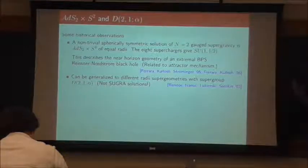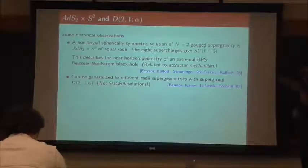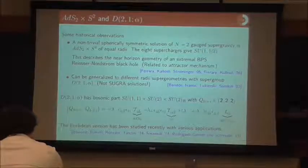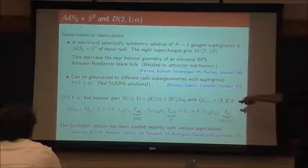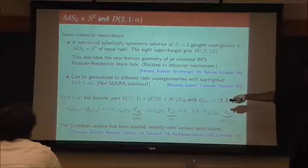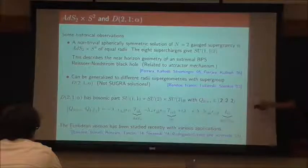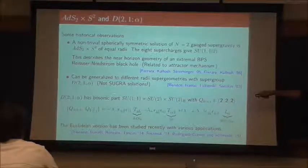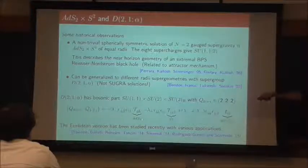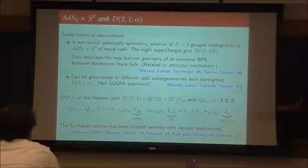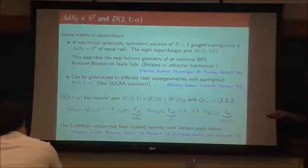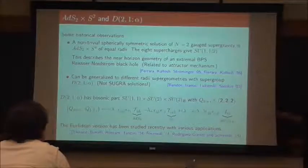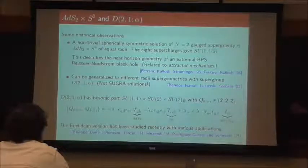Now that's not necessarily a problem because we're just looking at rigid geometries here. Let me mention — because this is interesting — that D(2,1;α) has a very interesting bosonic subgroup SU(1,1)×SU(2)×SU(2), where the Q's live in a doublet-doublet-doublet representation. The SU(1,1) is the spacetime symmetry of AdS₂, the second SU(2) is the spacetime symmetry of S², and SU(2)_R is the R-symmetry group. This has been studied recently, with papers finding links between theories on AdS₂×S² and Liouville theory.